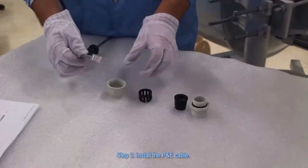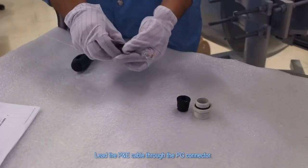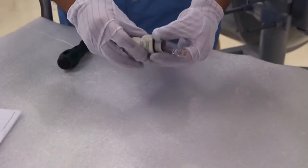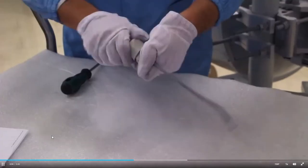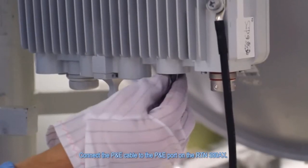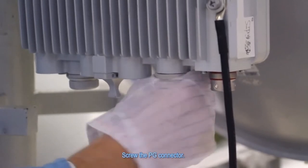Step 2: Install the P&E cable. Lead the P&E cable through the PG connector. Connect the P&E cable to the P&E port on the RTN380AX. Screw the PG connector.